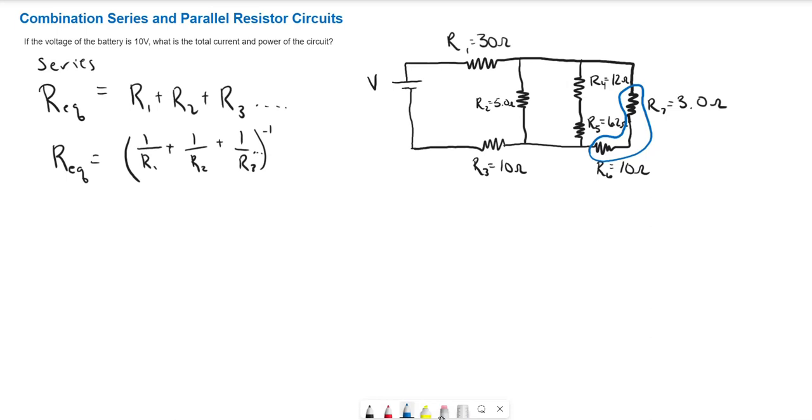So we could reduce those or find the equivalent resistance of each of those to make this a little simpler. And same goes for these two resistors here. They're in series with each other and there's nothing in between them that's in parallel. So we can just add those together.